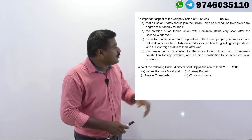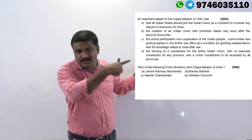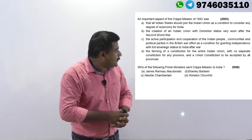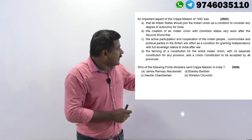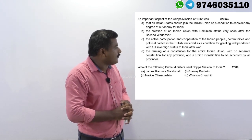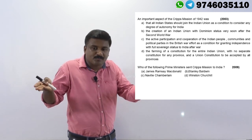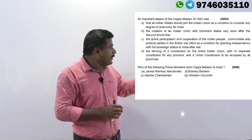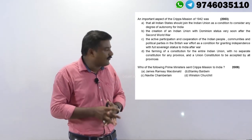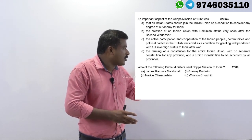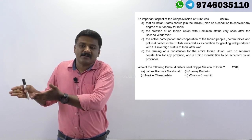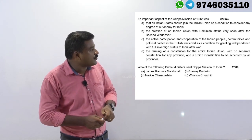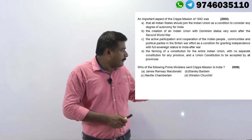Now let's solve some questions. 'An important aspect of Cripps Mission 1942' — from options ABCD: 'All Indian states should join Indian Union as a condition' — no such proposal existed. 'Creation of Indian Union with Dominion status very soon after the Second World War' — yes. 'Active participation as a condition for granting independence' — no. 'No separate constitution for any province' — incorrect, as provinces could frame separate constitutions. So option B is the answer.